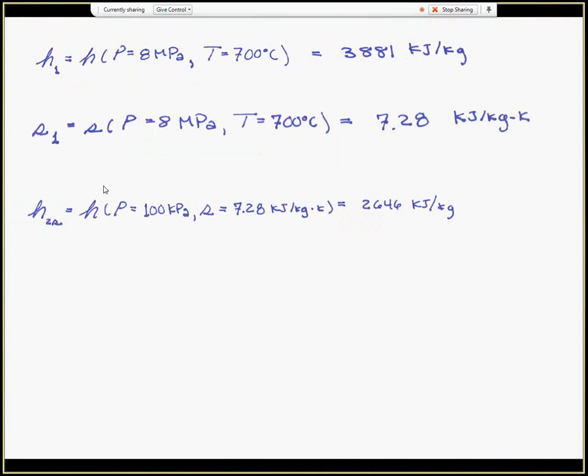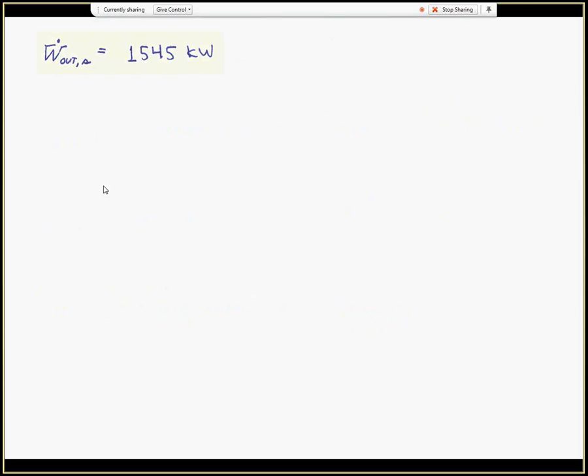Hopefully you're getting pretty good at finding properties at this point, and you're getting adept at using these additional tools like EES or the property calculator to find the properties, instead of having to use the steam tables all the time and doing countless interpolations. In any case, I use those values to find the isentropic power out of the turbine, paying careful attention to my units as always. It's 1,545 kW.